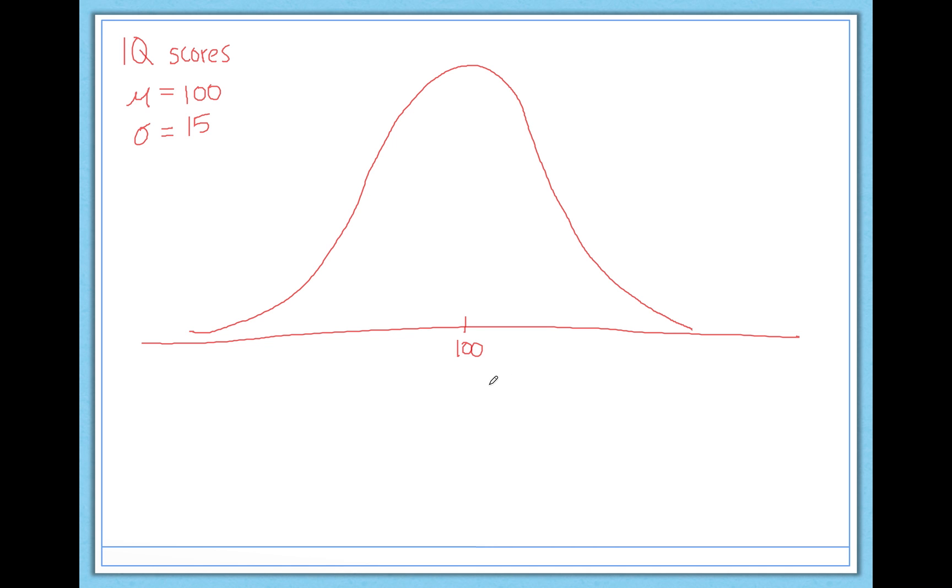So average IQ is right here at 100. One standard deviation above the mean would be 115. Two standard deviations above the mean would be 130. And three standard deviations would be 145. And we could do the same in the opposite direction. One standard deviation below the mean of intelligence is 85. Two standard deviations below is 70. And three standard deviations below the mean of intelligence is 55.